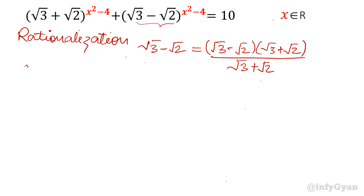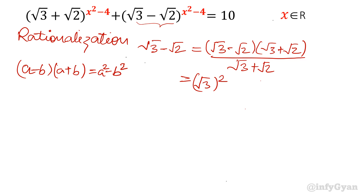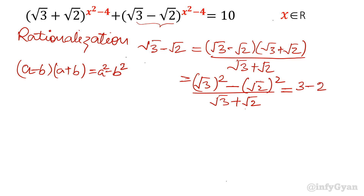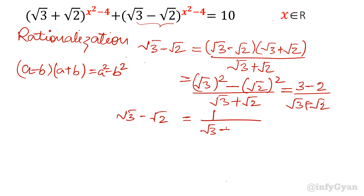We know the difference of squares formula: (a + b)(a - b) = a² - b². So the first bracket is (√3 - √2), giving us (√3)² - (√2)² = 3 - 2 = 1, all divided by (√3 + √2). So by rationalization, √3 - √2 = 1/(√3 + √2).